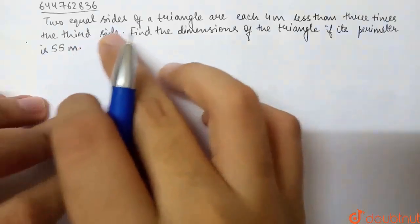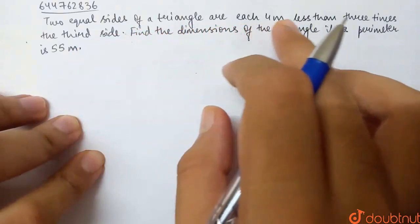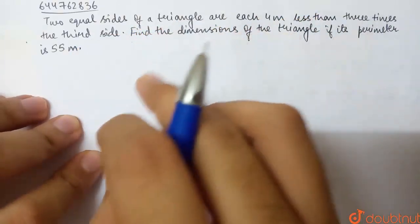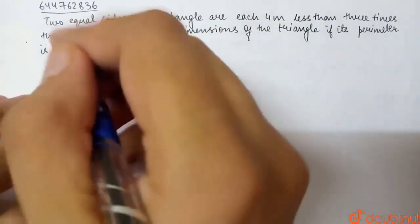This question is: two equal sides of a triangle are each 4 meters less than 3 times the third side. Find the dimensions of the triangle if its perimeter is 55 meters.